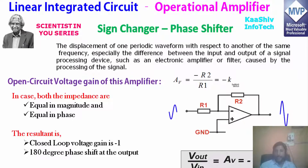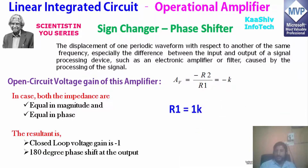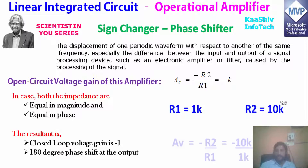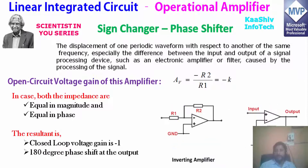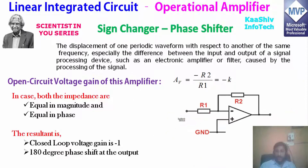It is a phase shifter or sign changer — you can see the positive becomes negative and negative becomes positive. That is: Vout equals minus R2 divided by R1 times Vin. For example, R1 equals 1 kilohm and R2 equals 10 kilohm, so the voltage gain Av equals minus 10.